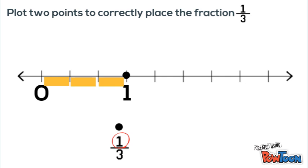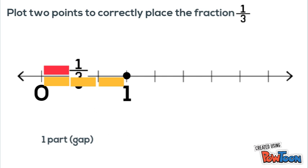Now the numerator of our fraction is 1, which means we have 1 gap or equal parts. So we put our dot for 1 third after 1 gap to represent 1 third.